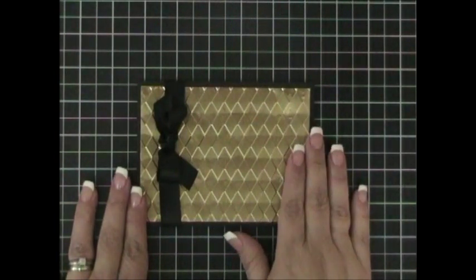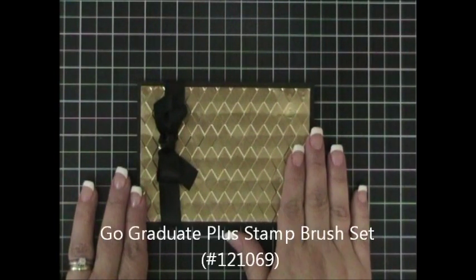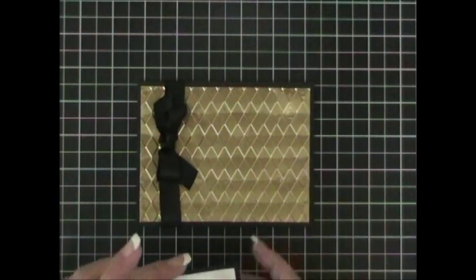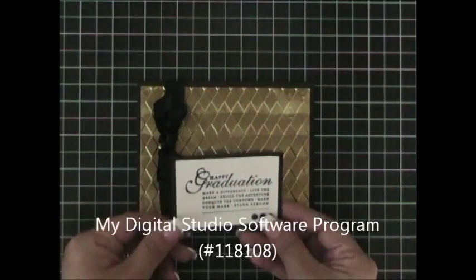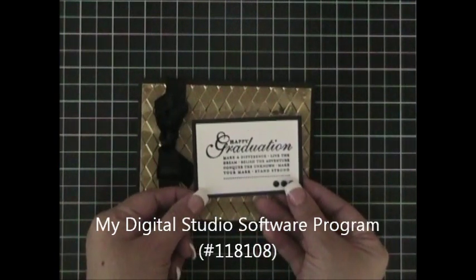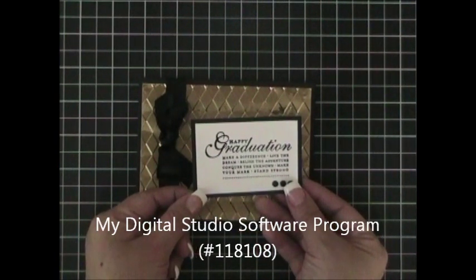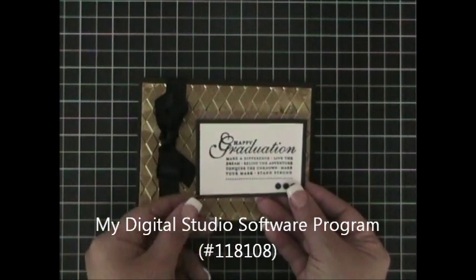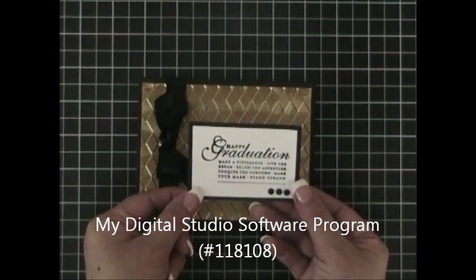I wanted to create a graduation card, and so I used the Go Graduate Plus Stamp Brush Set from my Digital Studio and sized this piece, printed it out and cut it into a 2 by 3 very whisper white piece that I matted onto a 2 and a quarter by 3 and a quarter piece of basic black cardstock.